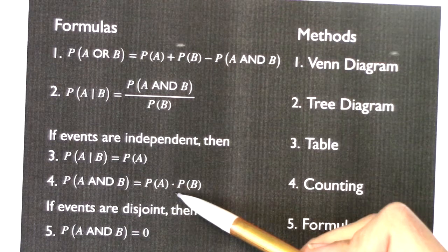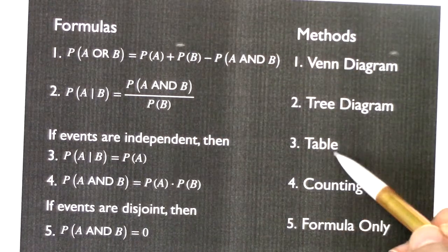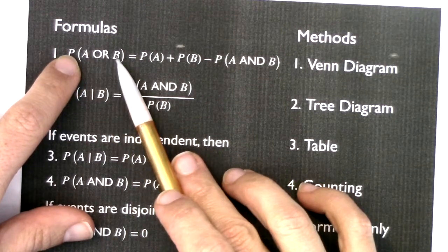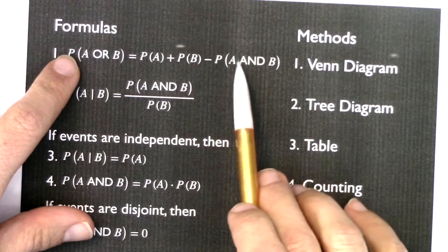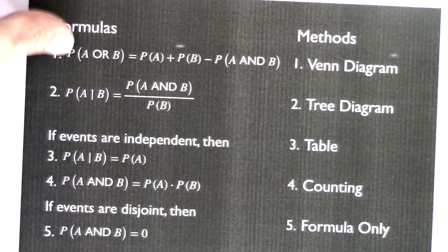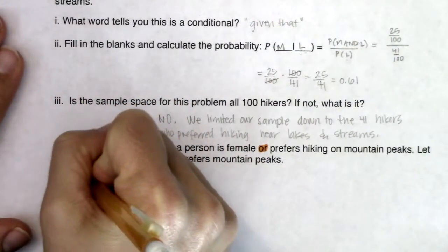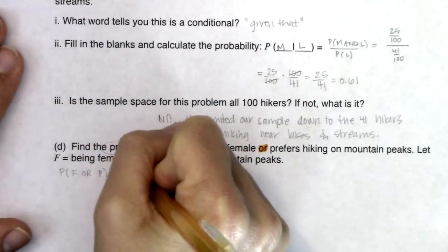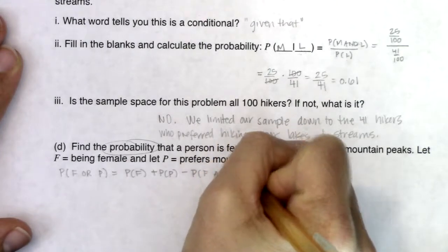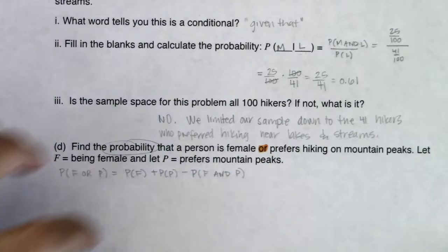In part B we used formula 4, in part C we used formula 2, but now in part D we're going to use formula 1. They gave me female or prefer hiking near mountain peaks — F or P. So: probability of F plus probability of P minus the probability of F and P. Let's swap out the letters in the formula for our particular problem and start crunching some numbers.